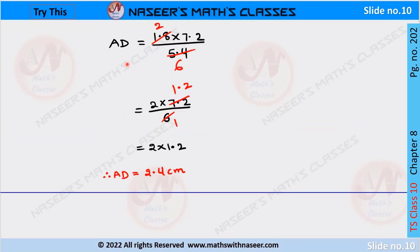Now AD = 1.8×7.2/5.4. After cancellation, we can write it as 2×7.2/6. We cancel: 6 into 7.2 gives 1.2, so we get 2×1.2. After multiplication, AD = 2.4 centimeters.